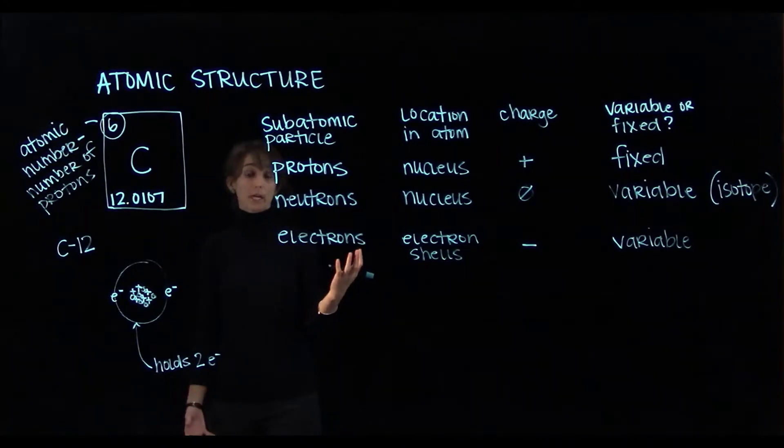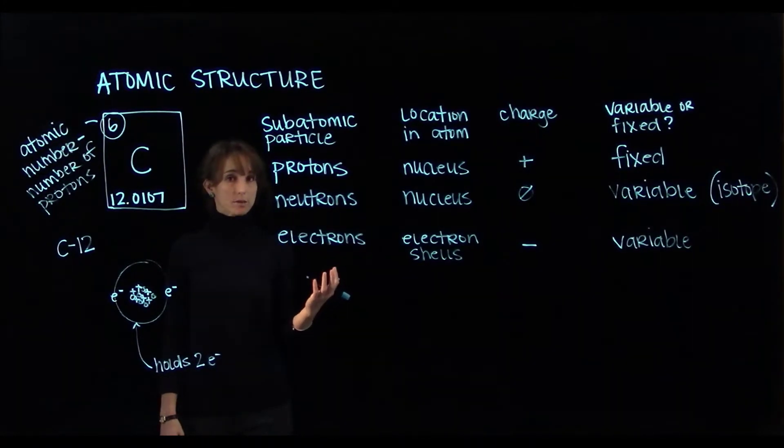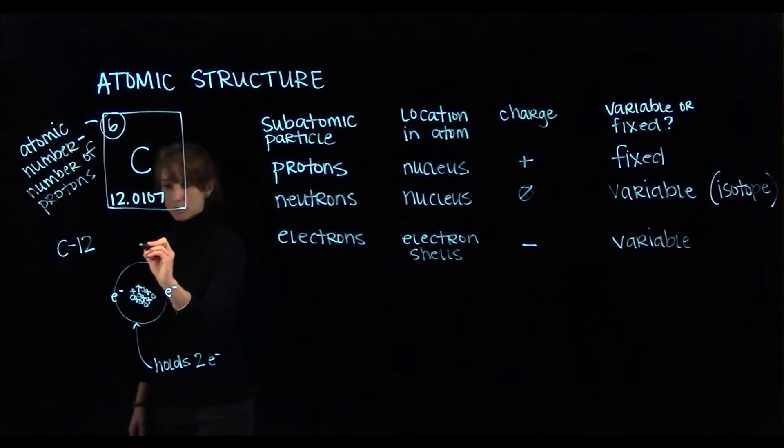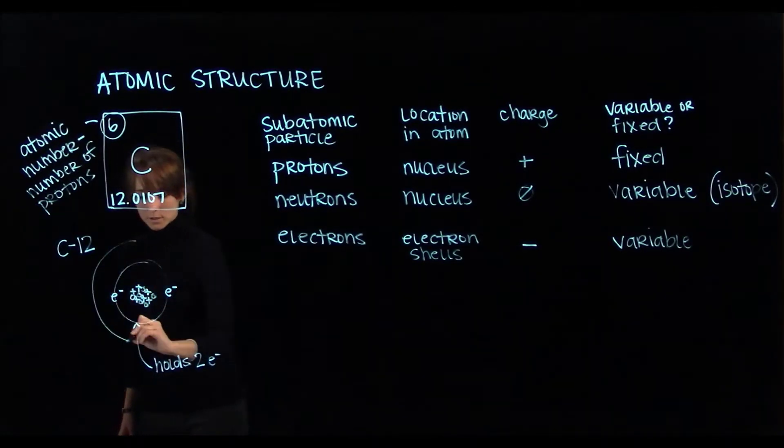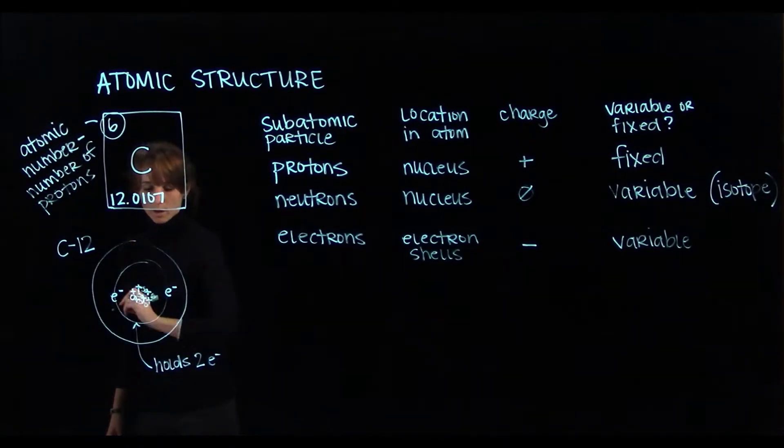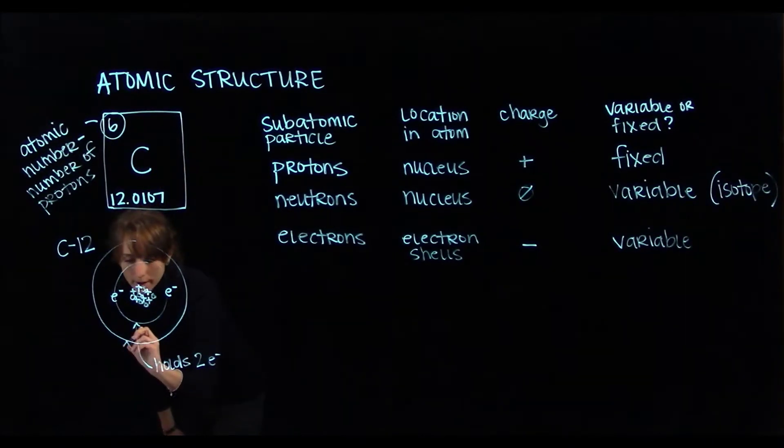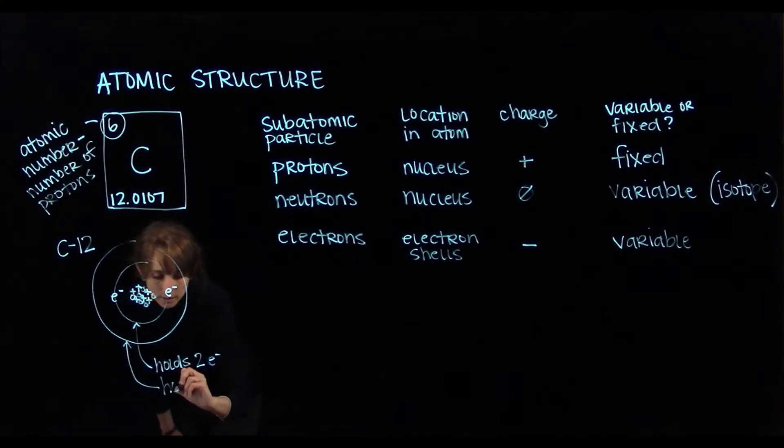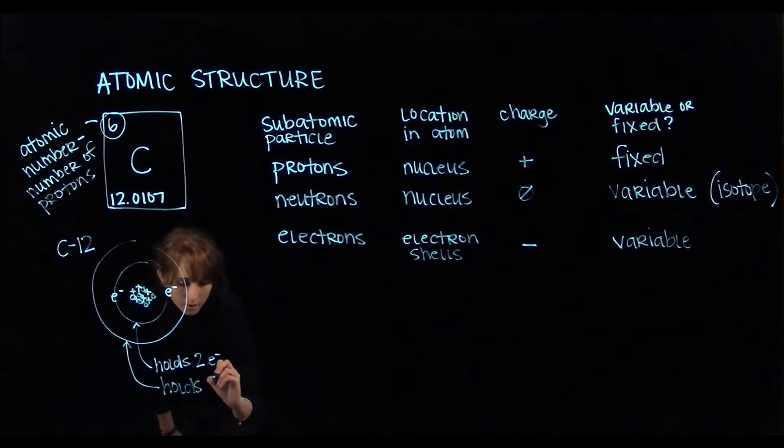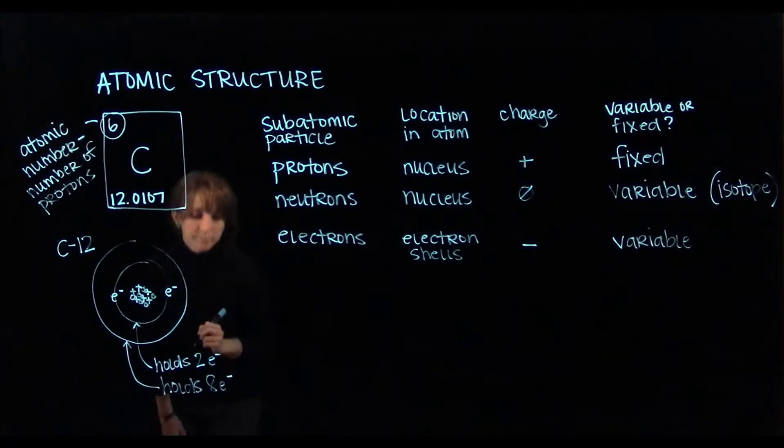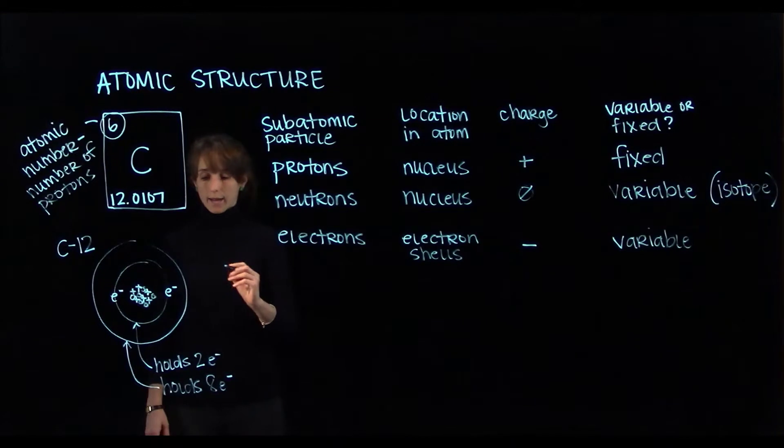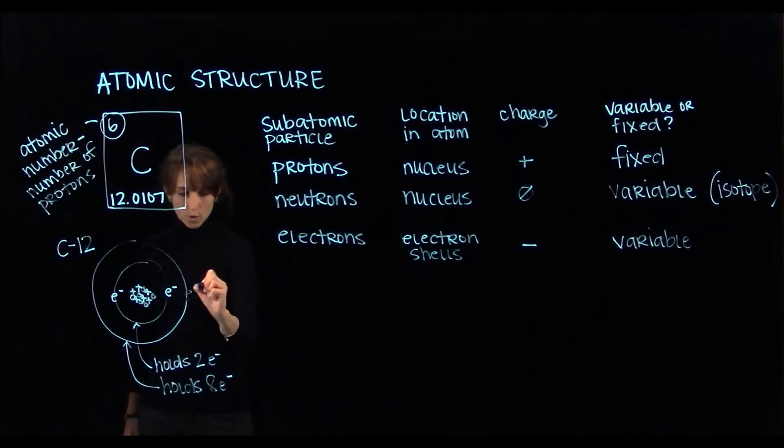But I said we were going to give our carbon atom six electrons, so we have to draw another shell outside of the first. This is a larger shell, and it can hold a maximum of eight electrons. We only have four more to add, so I'll add those four.